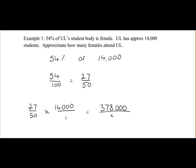Divide by 50 multiplied by 1, which is 50. When we put that into the calculator, you should get an answer of 7,560. So that means 7,560 female students attend UL.